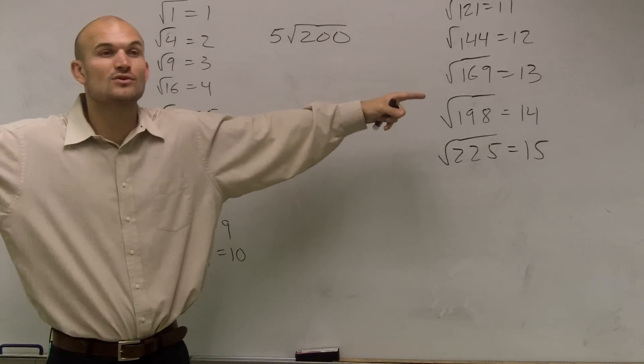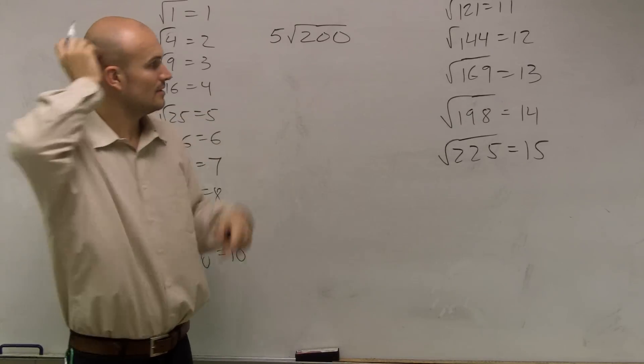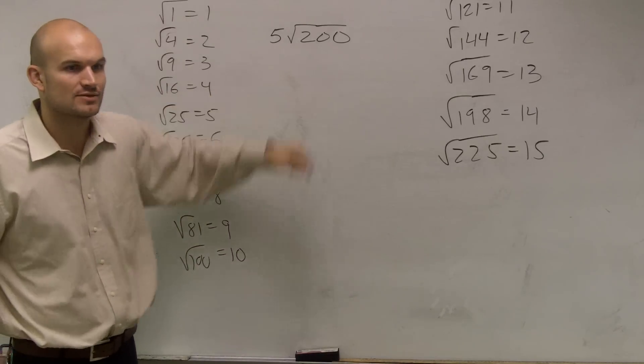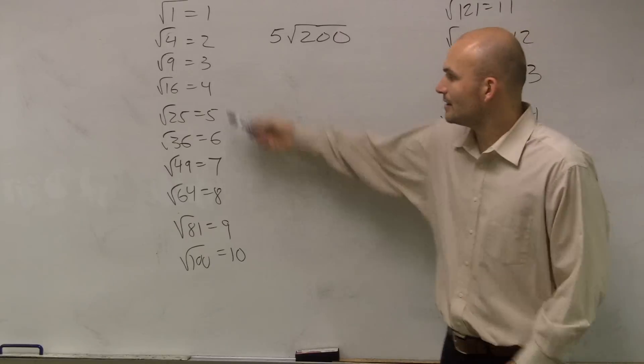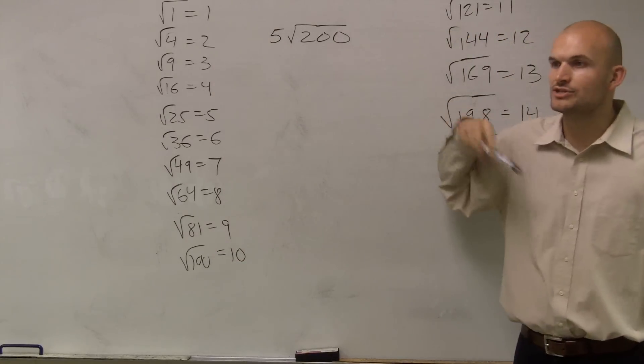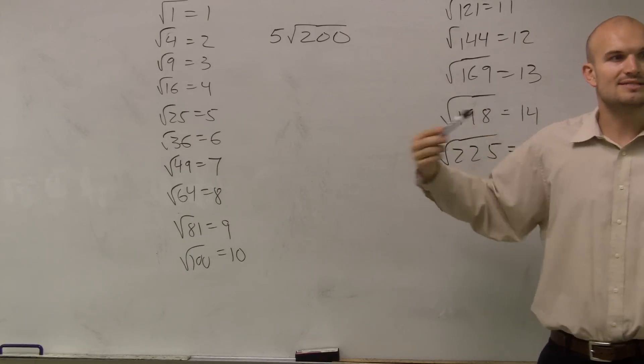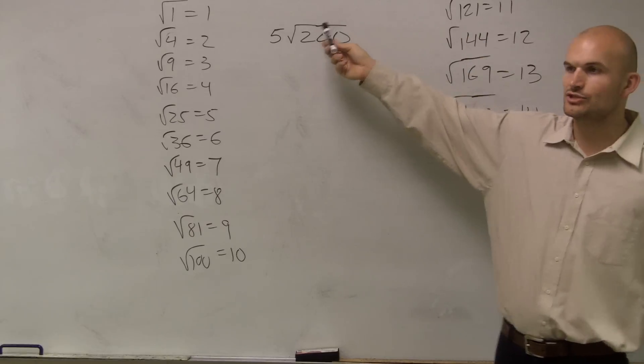Because that decimal actually goes on and on and on forever. Okay? So what we're going to do is we're going to simplify this. And the only way we can simplify it is let's see which one of these we do know and see if we can rewrite 200 in terms of that.